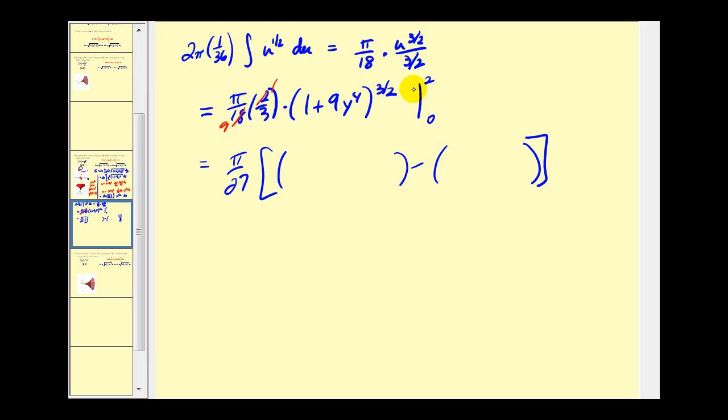Now we'll substitute two for y and then zero for y. Two to the fourth is 16, times nine is 144, plus one gives 145 to the 3/2 power, minus [1 + 0 to the 3/2], which is just one.